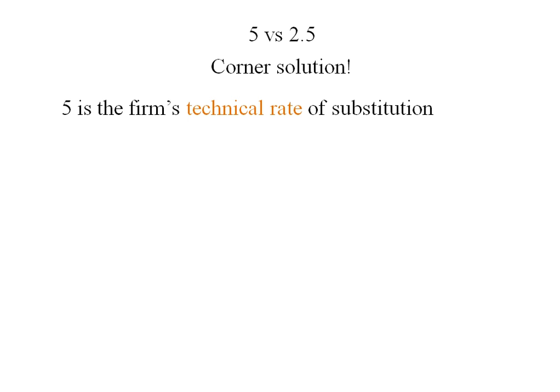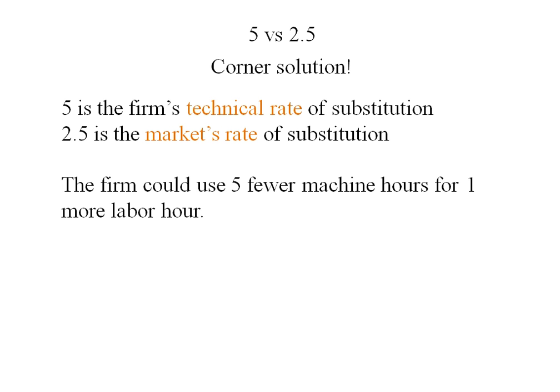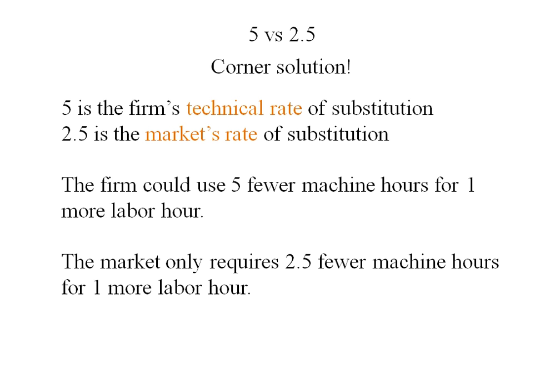When they're not equal, we know we have a corner solution. Now, 5 is the firm's technical rate of substitution, and 2.5 is the market's rate of substitution. That is, the firm could use 5 fewer machine hours for 1 more labor hour, but the market requires 2 and a half fewer machine hours for 1 more labor hour. What this means is, this firm should use more labor.